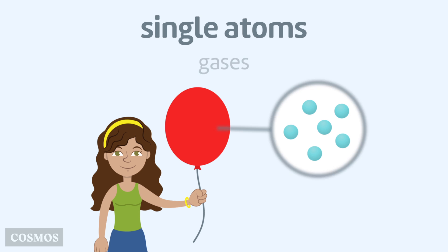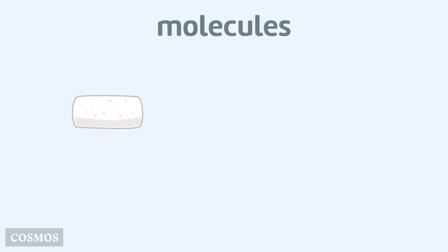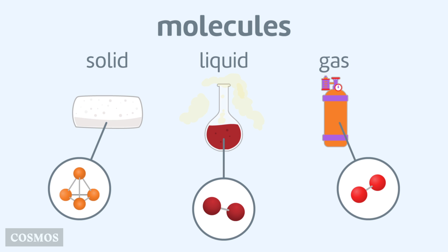Elements that exist as single atoms are all gases. Elements made up of molecules can be solid, liquid or gas at room temperature.